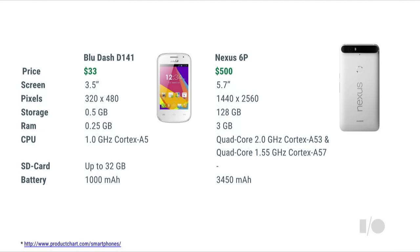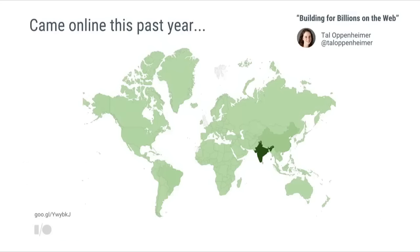Today you can walk into stores around the world and pick up very different phones. Around here you might pick up a Nexus 6P — great functionality, great performance, lots of storage, lots of memory. Just as likely, somewhere else in the world somebody will pick up a device on the other end of the spectrum with significantly fewer resources. And some of us think this is an outlier — the $33 phone — but if you heard the previous talk about building for the next billion, it compellingly illustrates the problem.